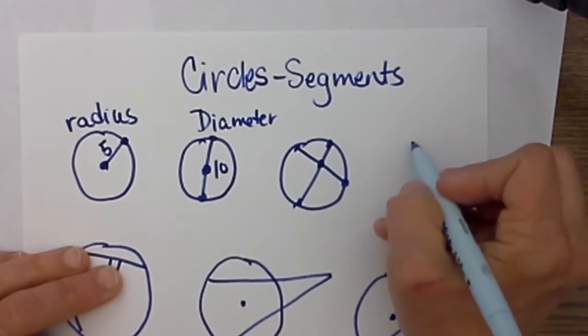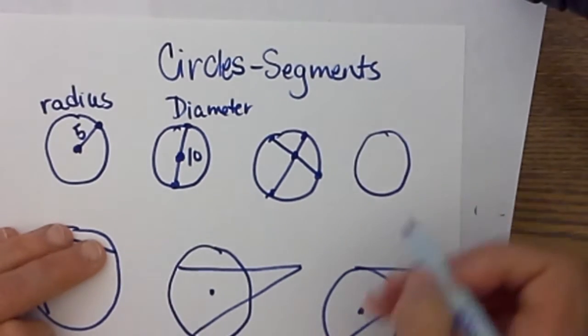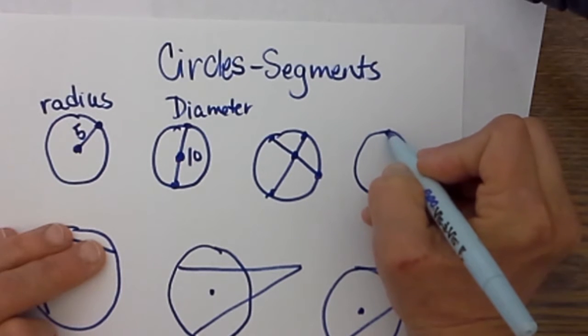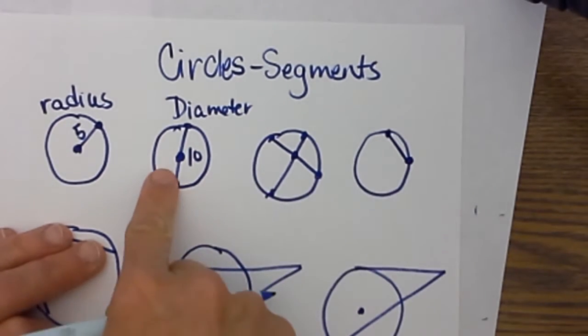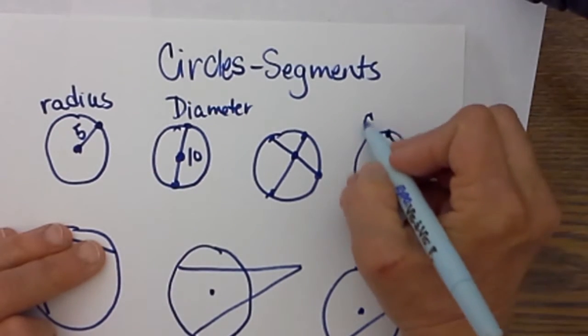You have also got what we call a chord. I didn't draw that so let's go over here and draw a chord. A chord is just a segment whose endpoints lie in the circle but it doesn't go through the center like a diameter. That one is just a chord.